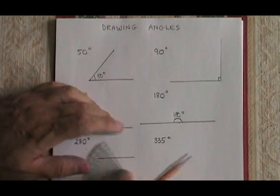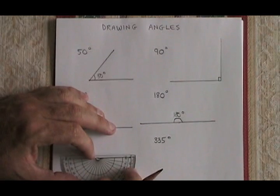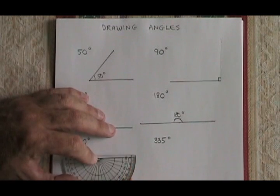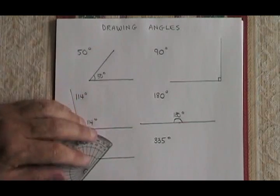Let's try drawing a 130 degree angle underneath our starting line. Counting from zero, 130 is over here. I put a dot.